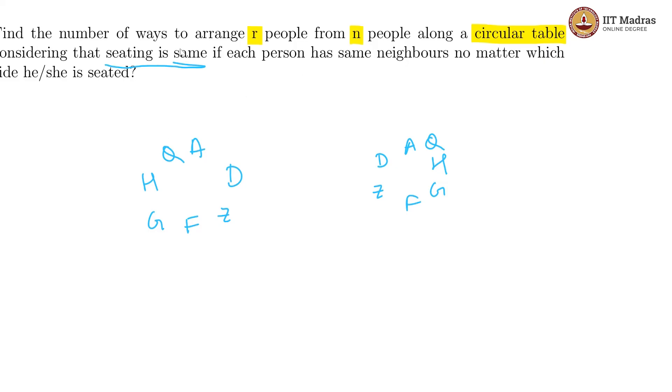So, the number of circular permutations we will get first of all if we look at it is taking R out of N people. So, we can first arrange them as NPR which will give us in a sequence like this. So, this is 1, 2, 3, so on till R.